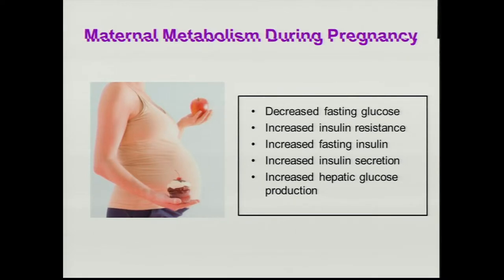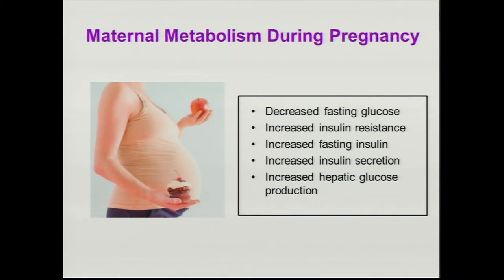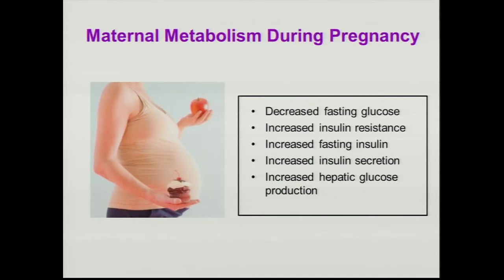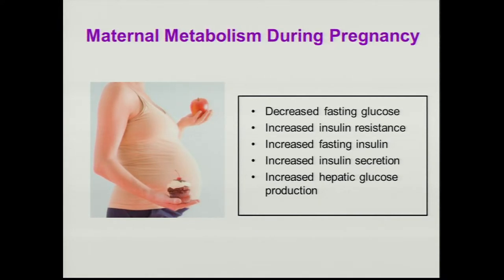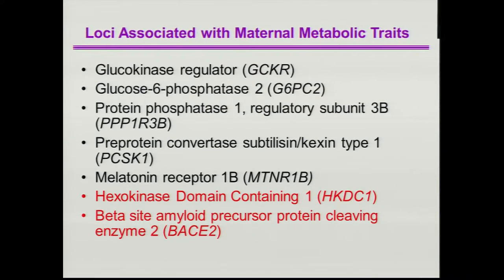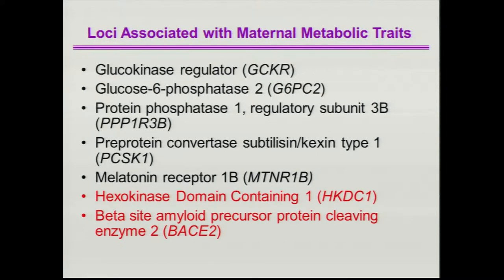The phenotype we've been studying is maternal metabolism during pregnancy. There are a number of changes in metabolism that occur during pregnancy to accommodate the growing fetus. There's a decrease in fasting glucose, which occurs despite an increase in insulin resistance, accompanied by increased fasting insulin levels, increased insulin secretion, as well as increased hepatic glucose production. We did a GWAS using 4,500 mothers from four different ancestry groups, looking at a variety of metabolic traits, and found genes demonstrating genome-wide significant association with fasting glucose, fasting C-peptide, or two-hour glucose levels.